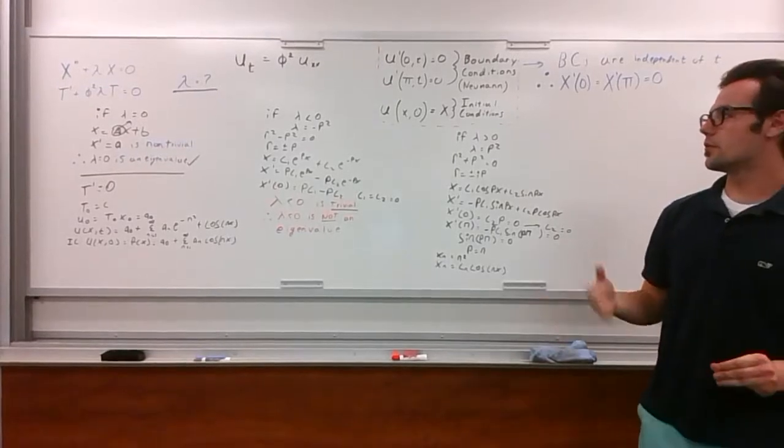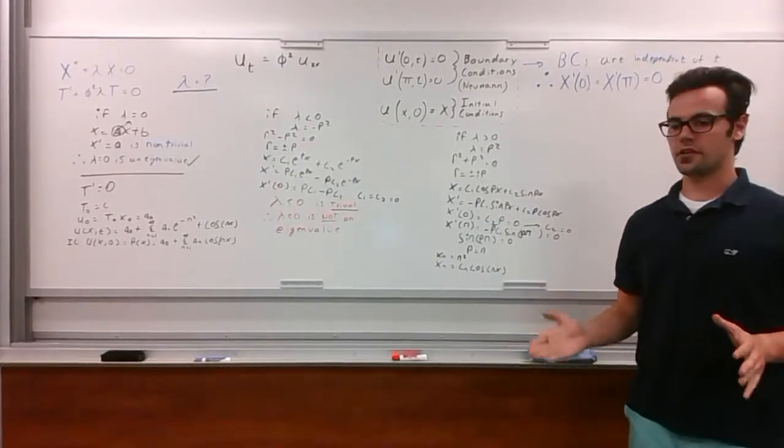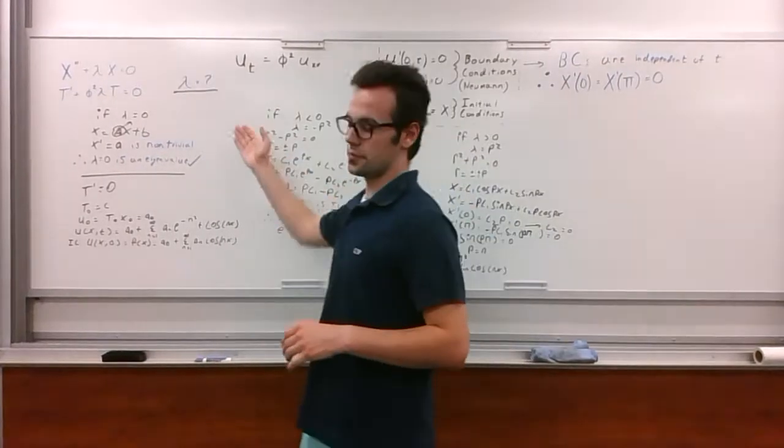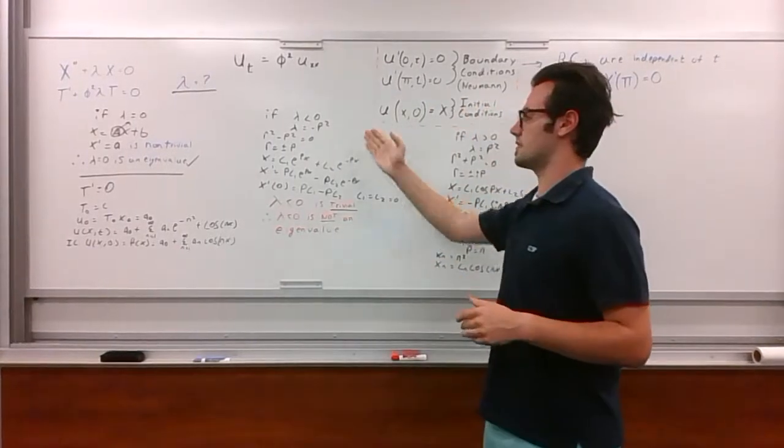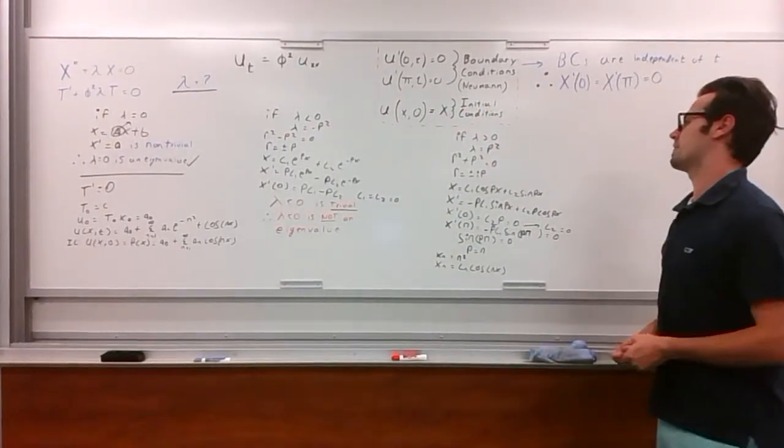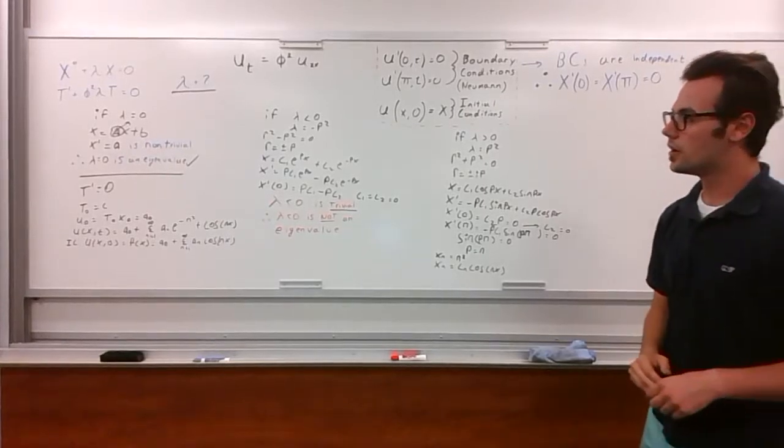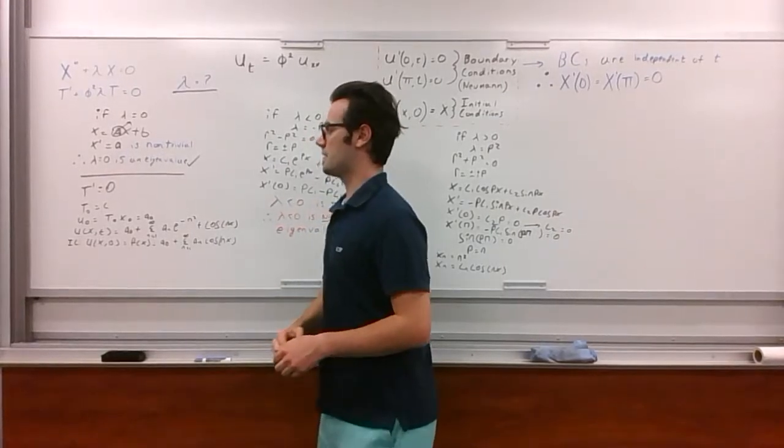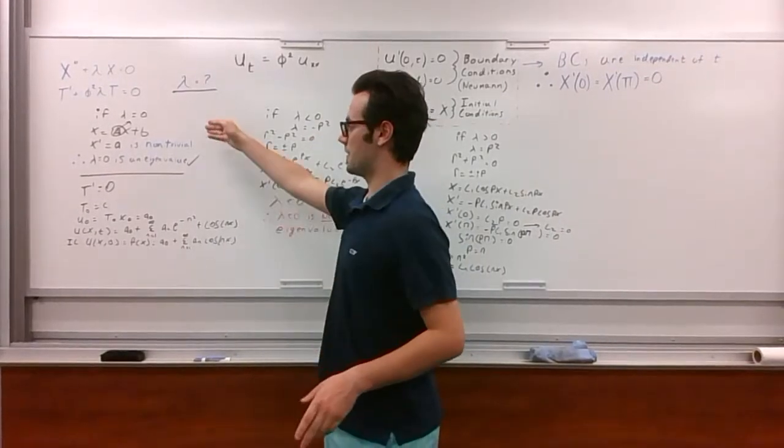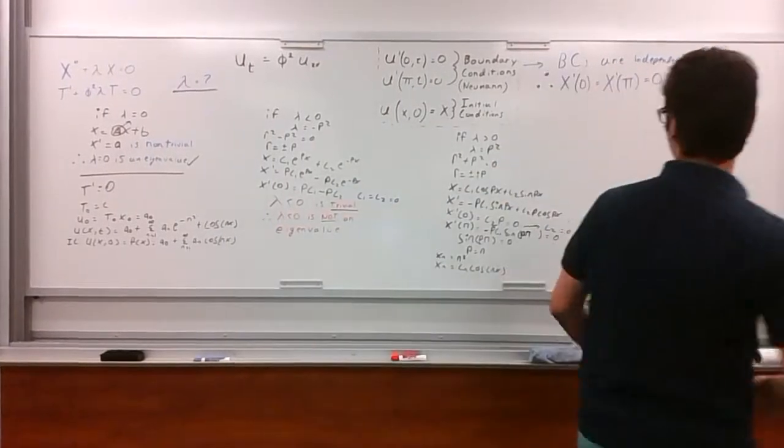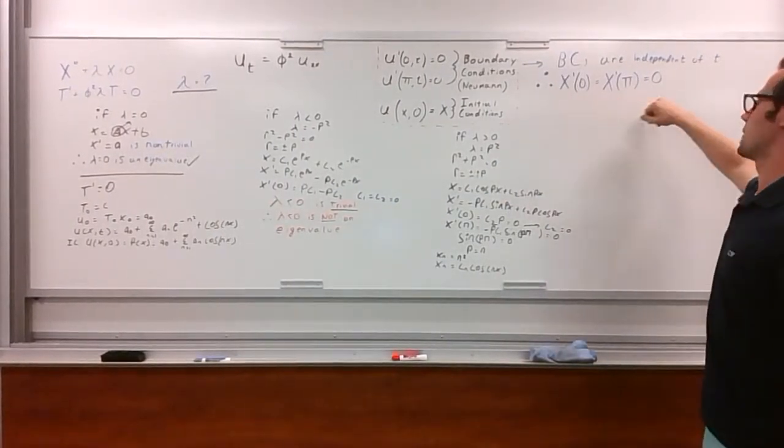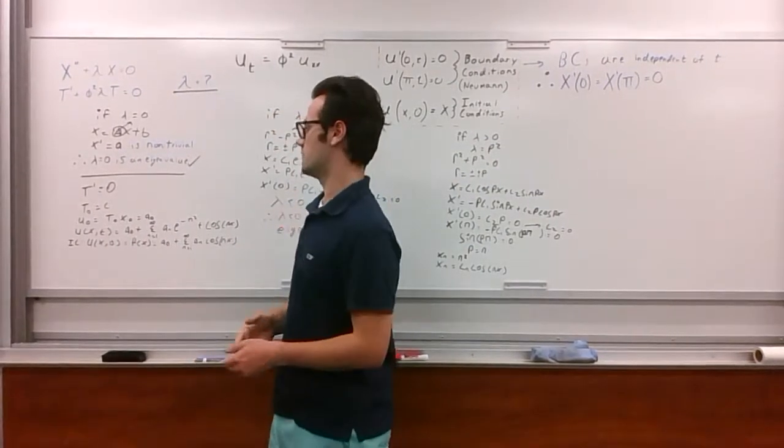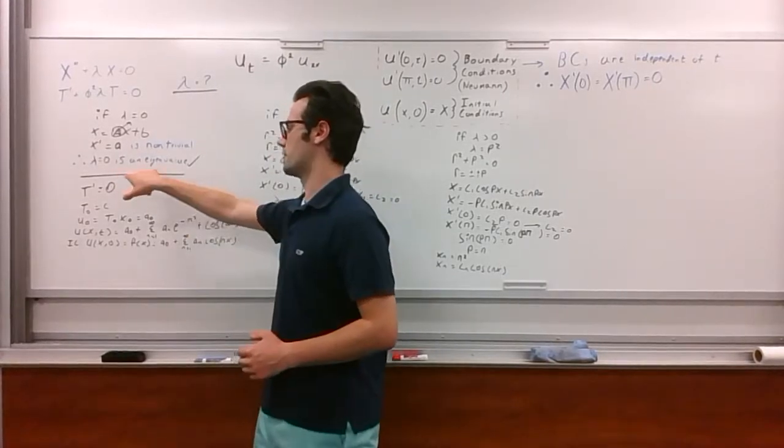Now that we know what we have to do with lambda, we have to solve the boundary value problem for the three possible eigenvalues. The first being if lambda equals zero, the second being if lambda is less than zero, and the third being if lambda is greater than zero. Moving on to the first eigenvalue possibility, if lambda equals zero, we would get the solution for x: x equals ax plus b. Applying our initial conditions here, x prime of 0 equals x prime of pi, which would equal zero, we get that x prime equals a, which is a non-trivial solution, and we prove that lambda equals zero is an eigenvalue.